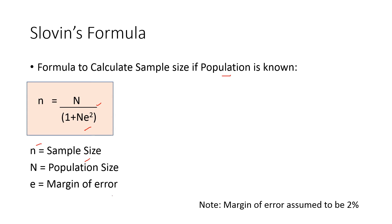E is the margin of error. Normally we are taking the margin of error as 2 percentage. So this is the case if the population is known to us.